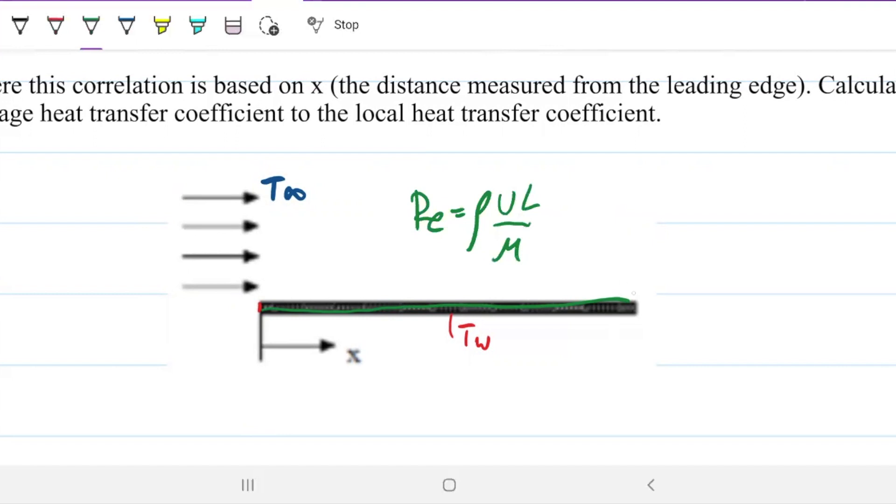So that means that if I measure the Reynolds over here, I'll be using this equation with L. But if I'm measuring the Reynolds over here, that will be just x, and x will be this distance to this point here. And because my Reynolds is varying as we go down this plate, then my Nusselt will also vary.